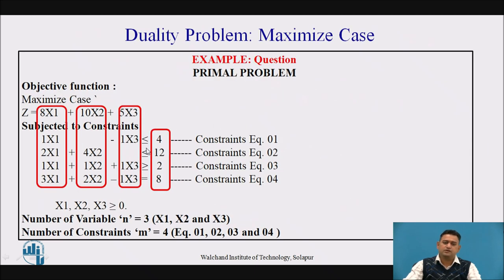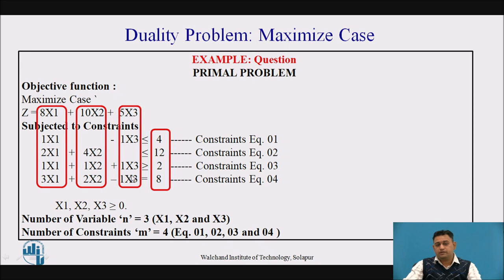Constraint 1: 1x1 − 1x3 ≤ 4, which is according to the maximized case — LHS less than or equal to RHS. Constraint 2: 2x1 + 4x2 ≤ 12, again similar to the maximized case. However, constraint 3: 1x1 + 1x2 + 1x3 ≥ 2, which is not according to the maximized objective function case, so it is not in standard form. Constraint 4: 3x1 + 2x2 − 1x3 = 8 is an equality, but to solve by the dual method, all constraints should be inequalities, so it is also not in standard form.